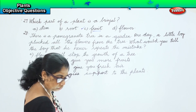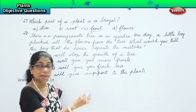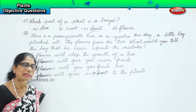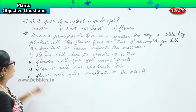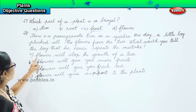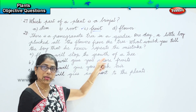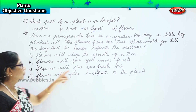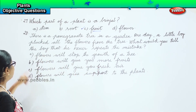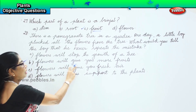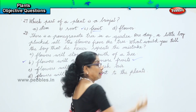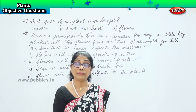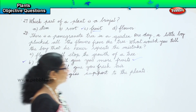Now look at the question. A little boy one day plucked all the flowers from the tree. What would you tell the boy that he never repeats the mistake? Flowers will stop the growth of a tree? No, that's wrong. Flowers will give support to the plant? No. Flowers will give you fresh air? No. Option B — flowers will give you more fruit — that's the answer. Tell the boy: the flowers are going to give you fruit, so if you pluck the flowers, where can you get fruit from?